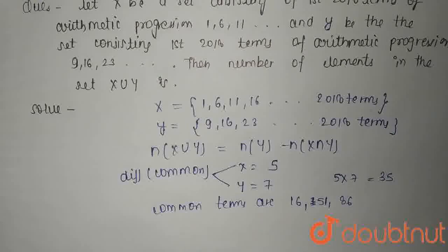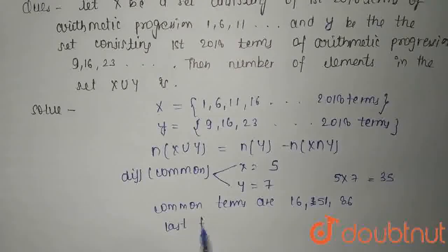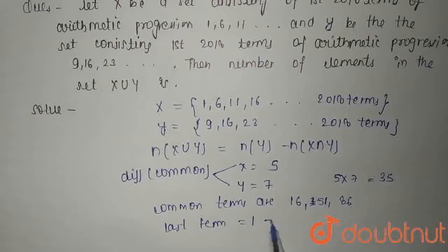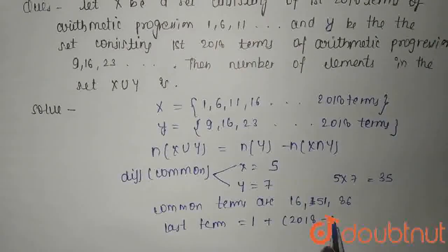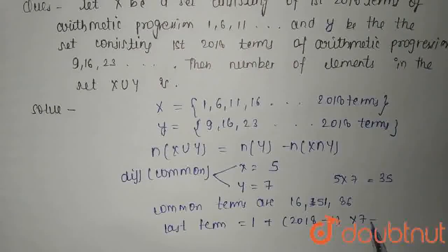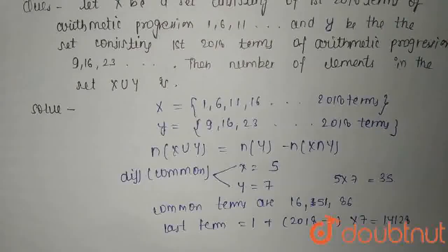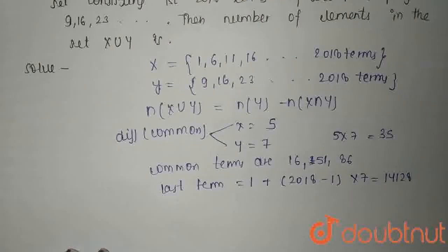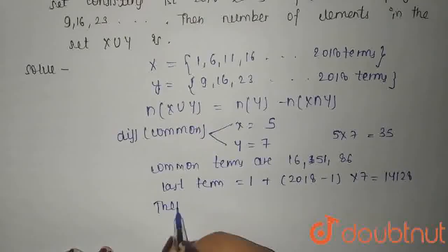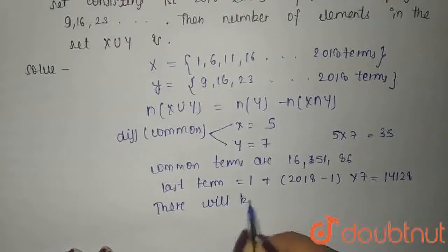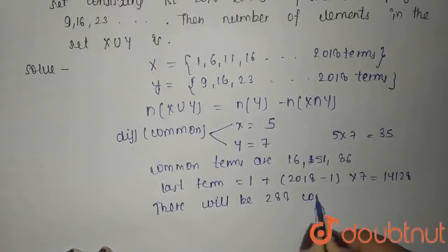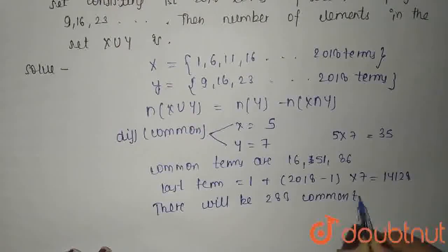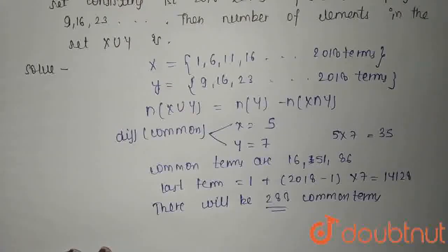So now the last term in the set X is 1 plus (2018 minus 1) times 5, that is 14128. There will be 288 common terms.